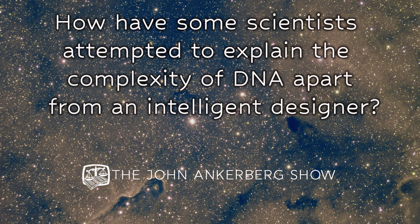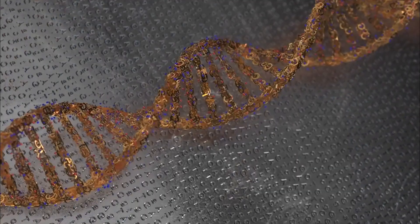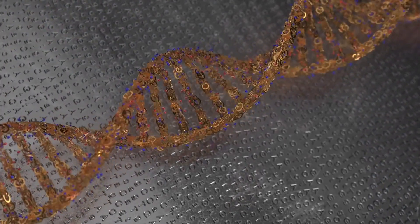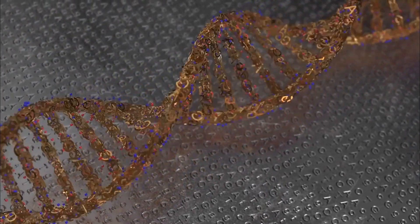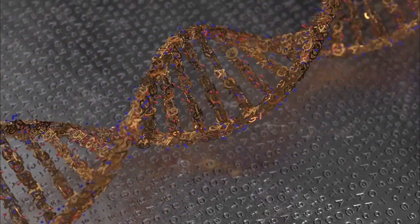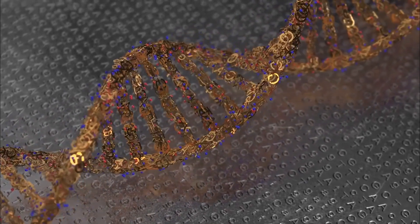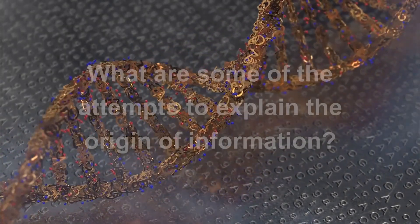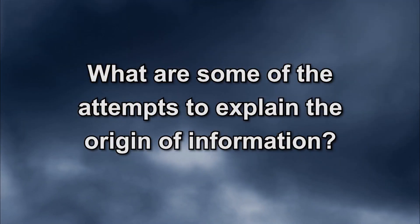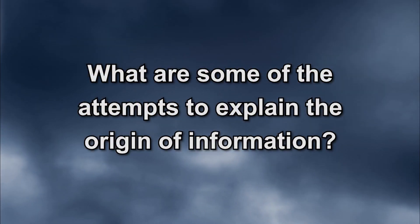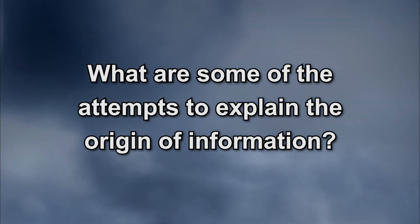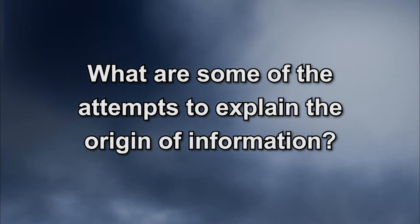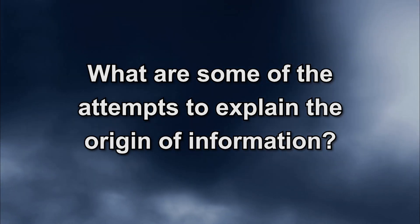In our last episode, you explained why the presence of this digital code in DNA suggests intelligent design. But there have been other attempts to explain the origin of information. Where did it come from? What are these other explanations?